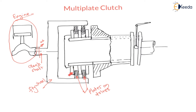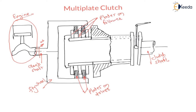The other plates are connected to the remaining parts of the machine element — they are mounted on the clutch shaft. The gearbox and wheels are connected to this clutch shaft, so power is transmitted from the clutch shaft to the other machine elements. Therefore these plates are called plates on driven, or follower, or plates on clutch shaft.